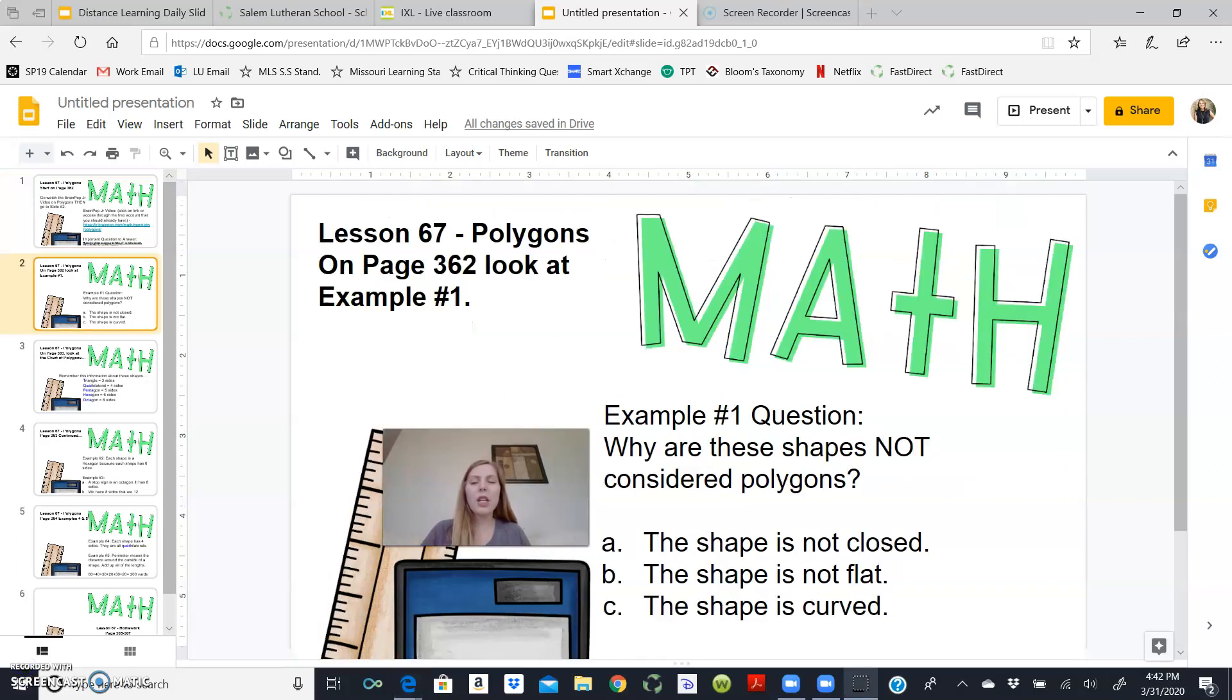Right, now that you've watched that video, I am on page 362. And we are going to be looking at example number one. Now the question that example number one has given us is why are these shapes not considered polygons? So if we were to look at the shape that's next to A, you might have noticed that it is missing a top line. And because it is not a closed shape, it cannot be considered a polygon.